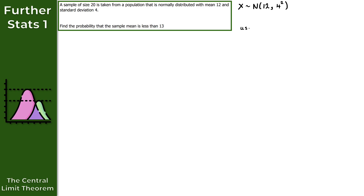Now we need to use the central limit theorem — I'll abbreviate this to CLT — because we want the probability that the sample mean is less than 13. Using the CLT, the sample mean x bar will be normally distributed. The mean under the CLT remains the same, so this will also be 12. However, do be careful with the variance: the variance is now 4 squared over the sample size n, which in this case is 20, giving us 4 squared over 20.